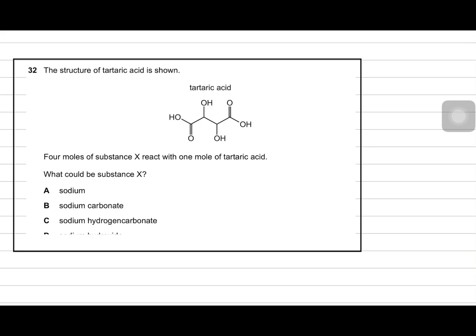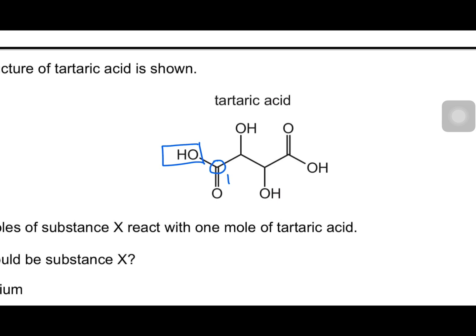Let's pick examples from here. It's a question from the past paper — we are not solving it, we are just looking at the structural formula. You can see there's an OH here, so it means this is not a carbon. The carbon starts from here. This is carbon number one. Then you can see there's carbon number two, carbon three, and carbon four. So technically there are four carbons.